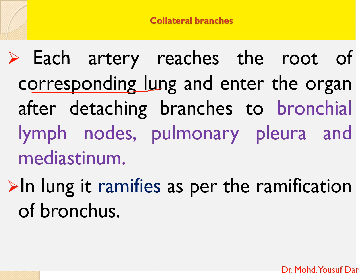Each bronchial artery reaches the root of the corresponding lung — the right bronchial artery goes to the right lung and the left bronchial artery to the left lung. Before entering the lung, each bronchial artery detaches branches that supply the bronchial lymph nodes, pulmonary pleura, and mediastinum.